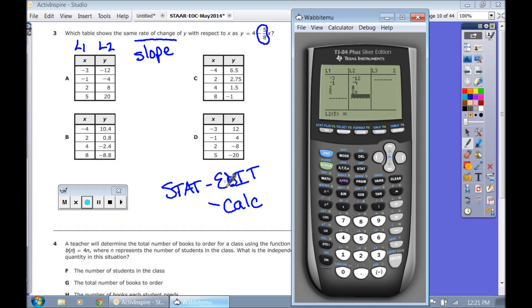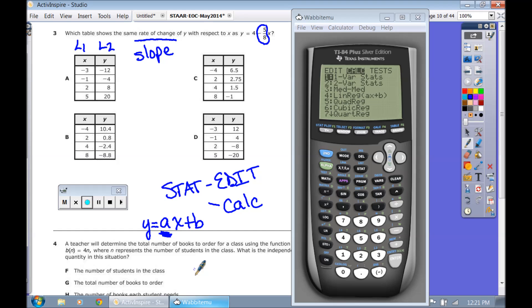Then we're going to go stat calc. And you're going to see something very familiar, number 4, ax plus b. The ax plus b is calculator language for mx plus b. The a and the m are the same thing. So when the calculator gives you a value of a, they're telling you that's the slope. The value of b is going to be the y-intercept.